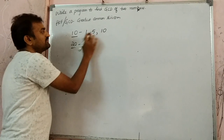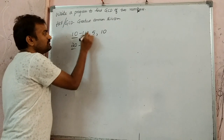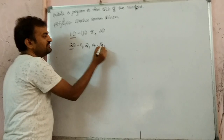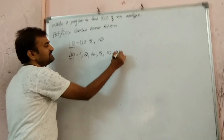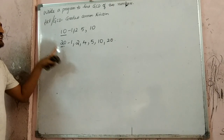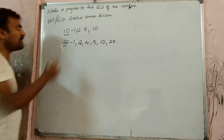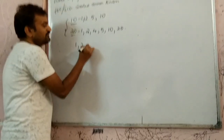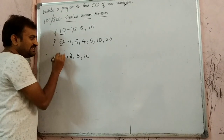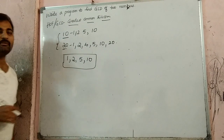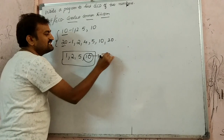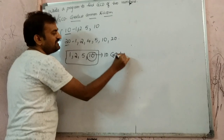And what are the factors of 20? 1, 2, 4, 5, 10, 20. So these are the factors of 20. So in this, like for 10 and 20, what are the common factors we have to find? The common factors between 10 and 20 are: 1, 2, 5, and 10. Our question is what? Greatest common divisor — that is, in these factors, what is the greatest number which is common to both numbers? 10. So 10 is the GCD for 10 and 20.